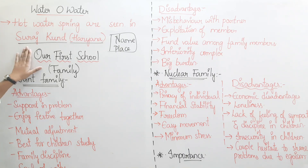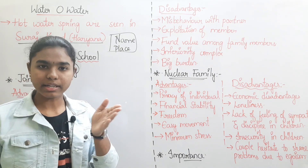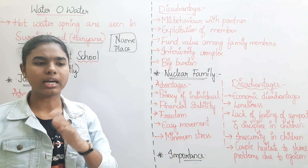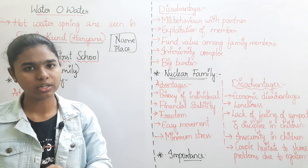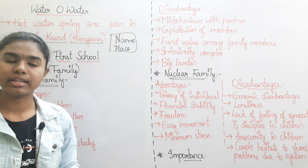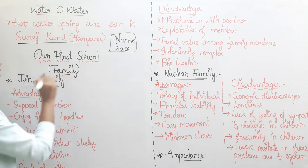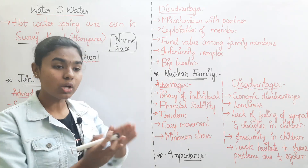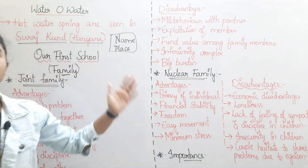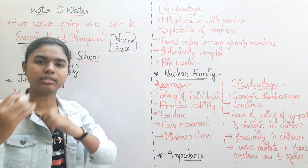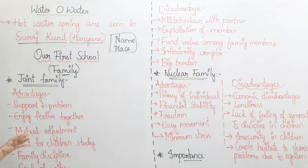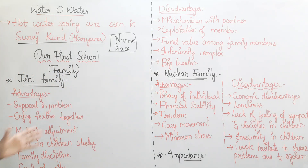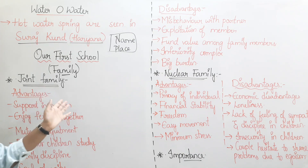Next topic is Our First School. Since we are older, we have a lot of families and many parents. Now we are older than the third class students, so we already know these concepts. The topic here is joint family and nuclear family.